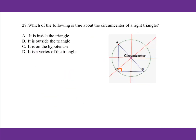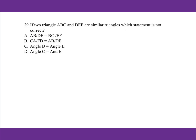For number 28, which of the following is true about the circumcenter of a right triangle? The answer is: it lies on the hypotenuse. The circumscribed circle's center is the midpoint of the hypotenuse, and that angle will be a right angle. Therefore, the circumcenter of a right triangle is at the midpoint of the hypotenuse.